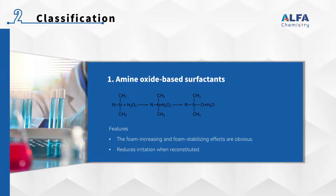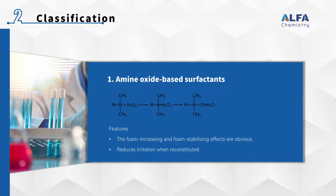Aminoxide is usually prepared by the reaction of tertiary amine with hydrogen peroxide. The chemical properties of aminoxide are similar to those of amphoteric surfactants. They are compatible with anionic surfactants, cationic surfactants, and non-ionic surfactants, and show non-ionic properties in neutral and alkaline solutions and weak cationic properties in acidic solutions. Aminoxide-based surfactants possess a quaternary ammonium group and an oxygen atom in their molecular structure. They exhibit excellent foaming and wetting properties, making them commonly used in personal care products such as shampoos, bubble baths, and facial cleansers. Furthermore, they also find applications as emulsifiers, detergents, and dispersants in various industrial processes.